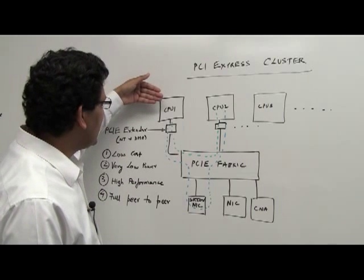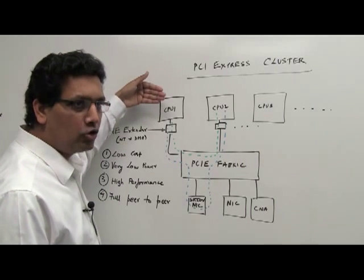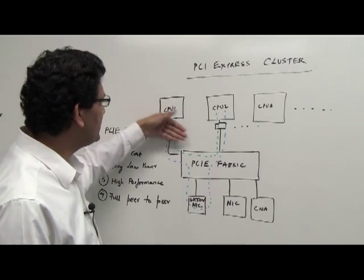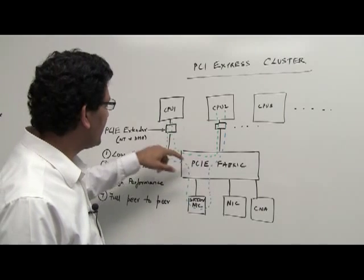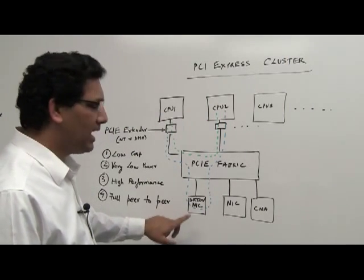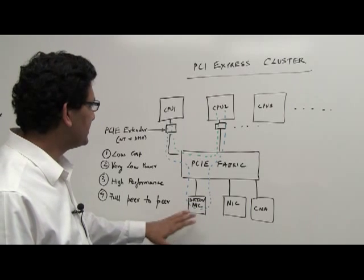So the host-to-host communication can take place directly between CPU to CPU through the PCI Express fabric or through a shared NIC, and I'll briefly talk about what the shared NIC is in a moment.